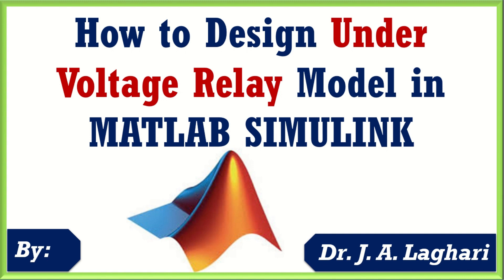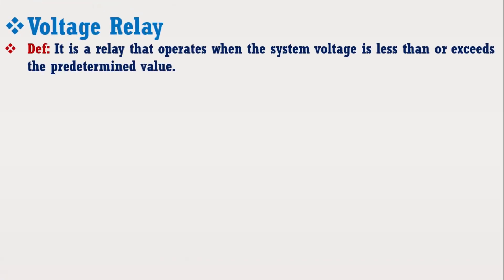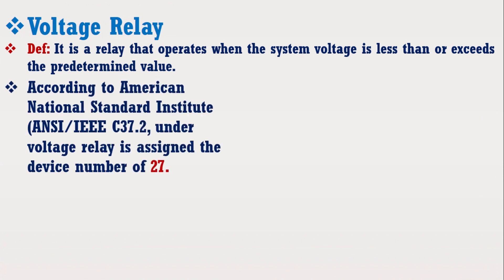A voltage relay can be defined as a relay that operates when the system voltage is less than or exceeds the predetermined value. According to American National Standard Institute and IEEE Standard C37.2, the undervoltage relay is assigned the device number of 27.